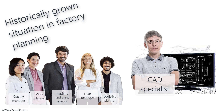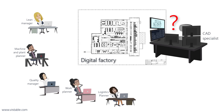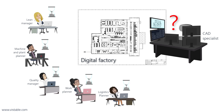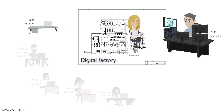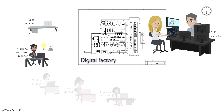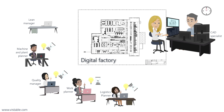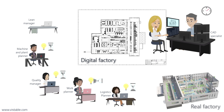Unfortunately, there is a serious challenge with this constellation — and maybe you know this from your own company. All planners are dependent on one person in the factory planning process and are not capable of acting themselves. If a planner wants to realize a layout project, he needs the CAD specialist, and both are then tied up in the project. If another planner wants to plan something during this time, he must wait until the CAD specialist is available again. Changes to products and processes usually affect various planners, each of whom needs the specialist, but parallel work is not possible. The planners are thus often slowed down.